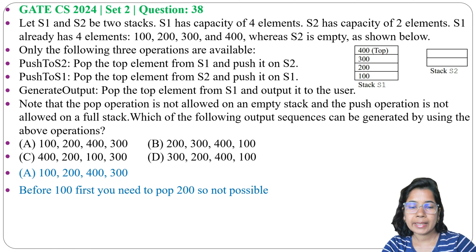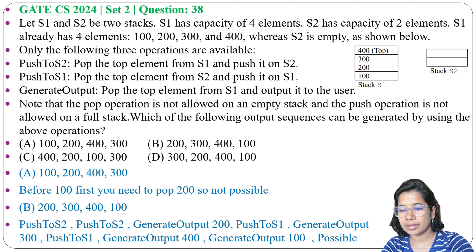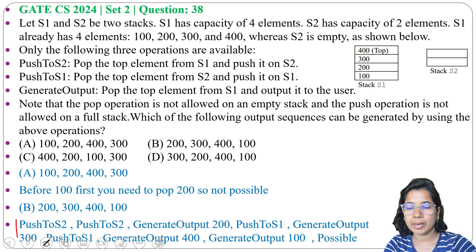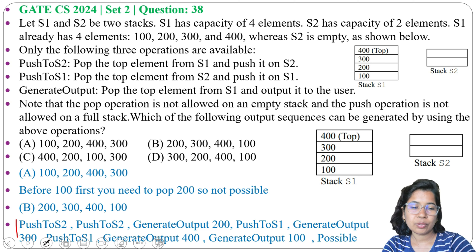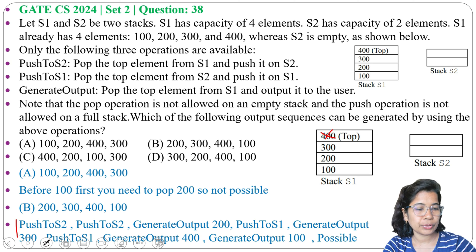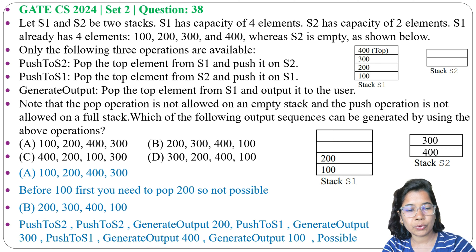Option B: 200, 300, 400, 100. Let's execute the operations one by one. S1 has 100, 200, 300, 400 and S2 is empty. Push to S2: pop 400 and push to S2. Next, push to S2: pop 300 and push to S2. Next, generate output: pop 200 and output it.